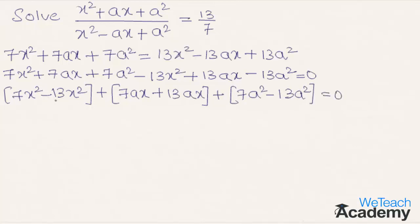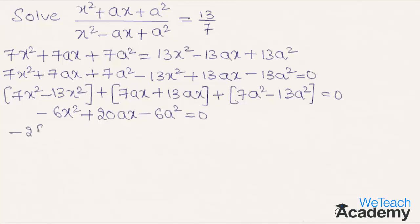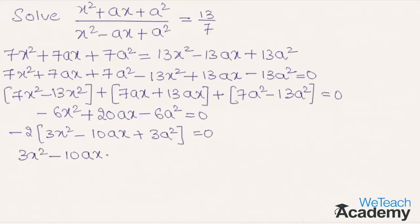Combining like terms, 7x squared minus 13x squared gives minus 6x squared, 7ax plus 13ax gives 20ax, and 7a squared minus 13a squared gives minus 6a squared equal to 0. Taking minus 2 as a common factor gives minus 2 into 3x squared minus 10ax plus 3a squared equal to 0. Transferring minus 2 to the other side, we get 3x squared minus 10ax plus 3a squared equal to 0.